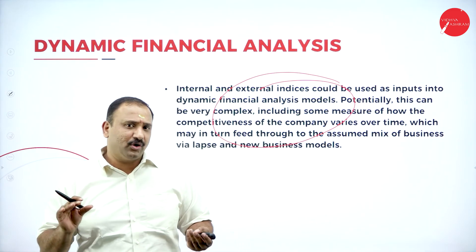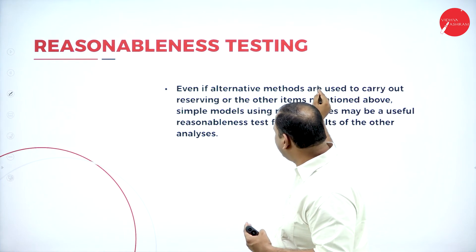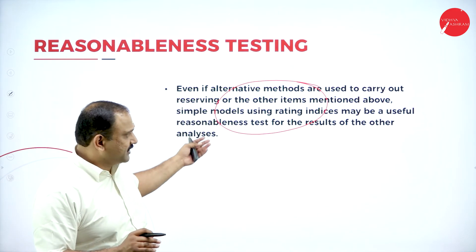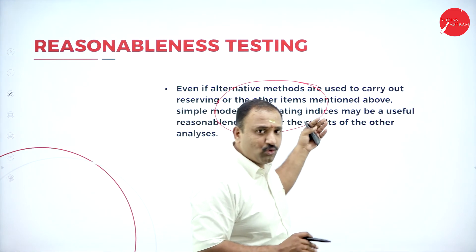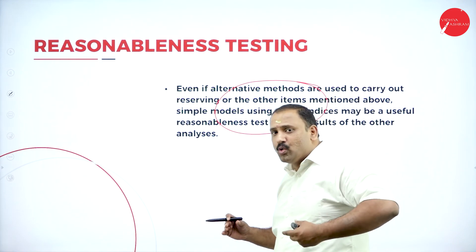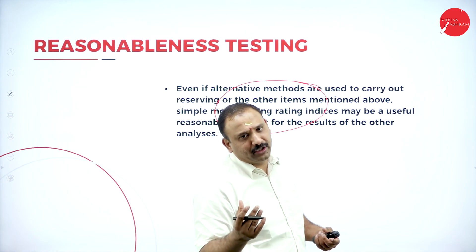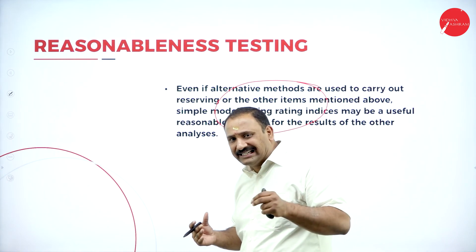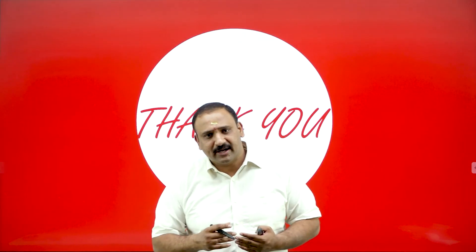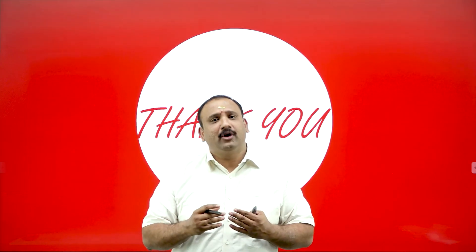Reasonable testing is done by putting policies into different models, rating the index, and evaluating whether predicted results are accurate. Insurance companies run test cycles to find out predictive results of each policy and decide the premium accordingly. With this, the session on premium rating comes to an end. Understanding these factors — predicting cycle, return analysis, and dynamic financial analysis — is crucial to understanding how your premium is priced.